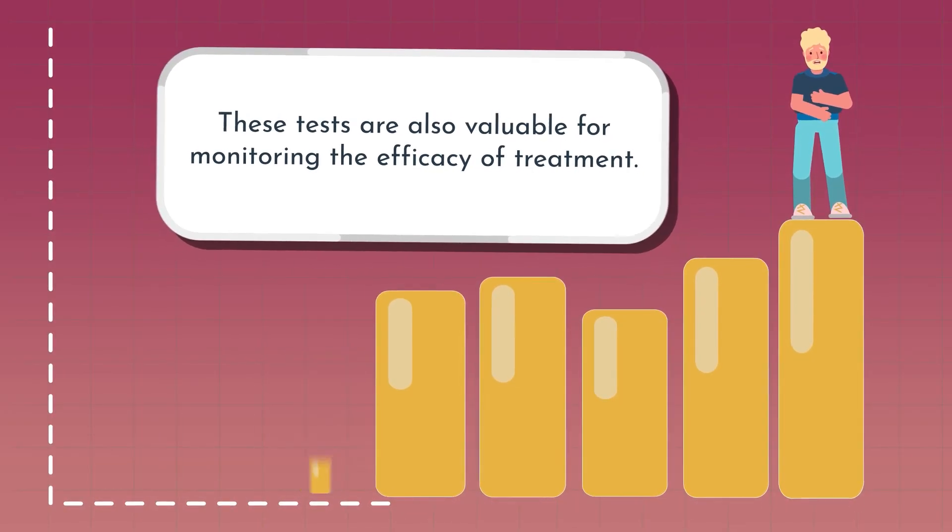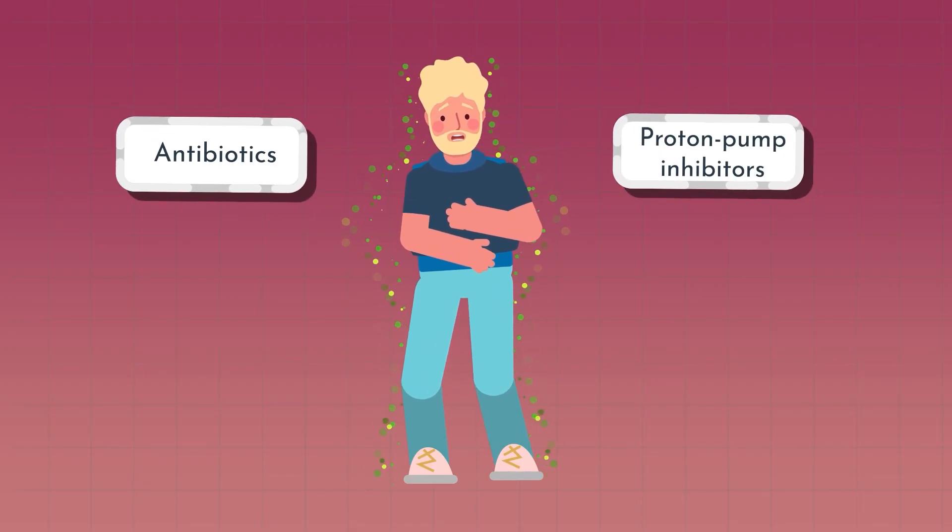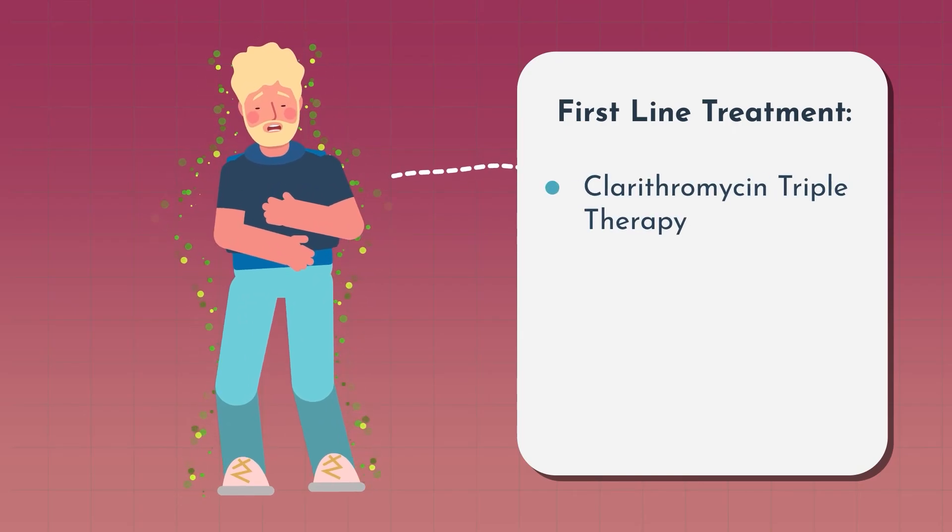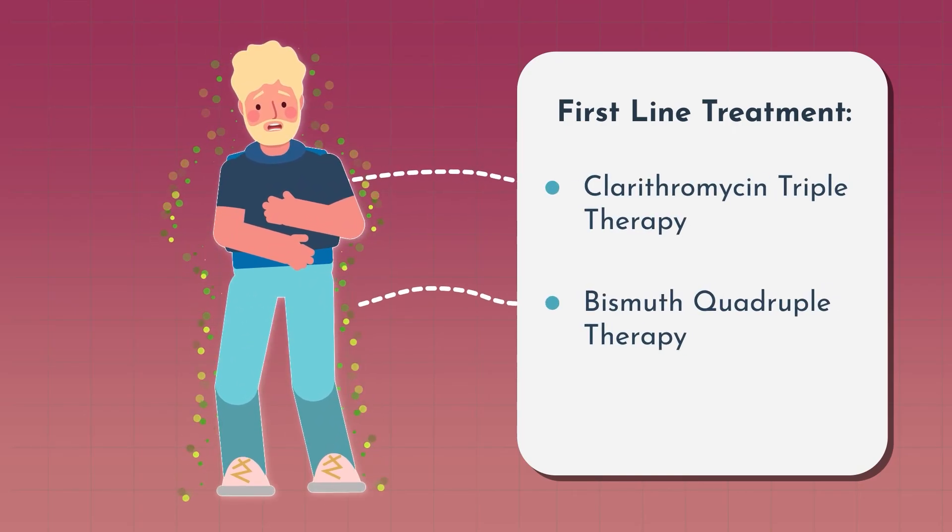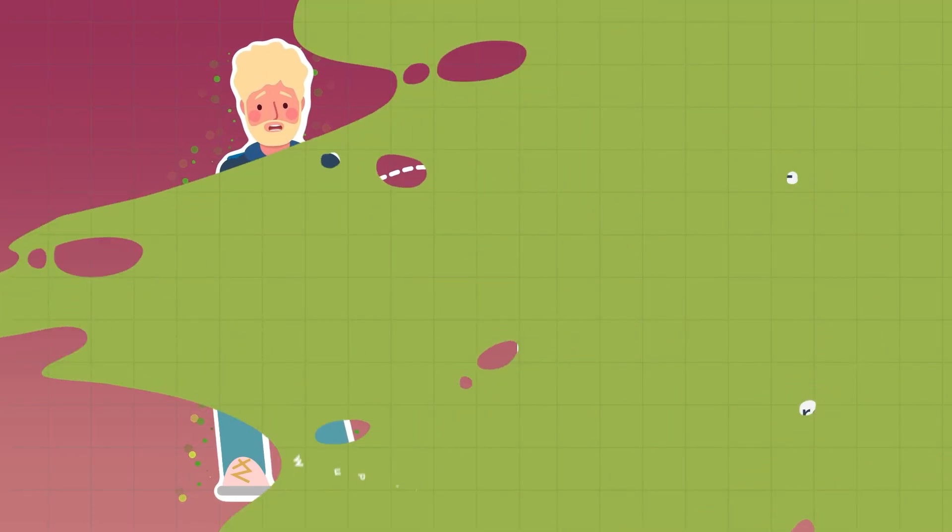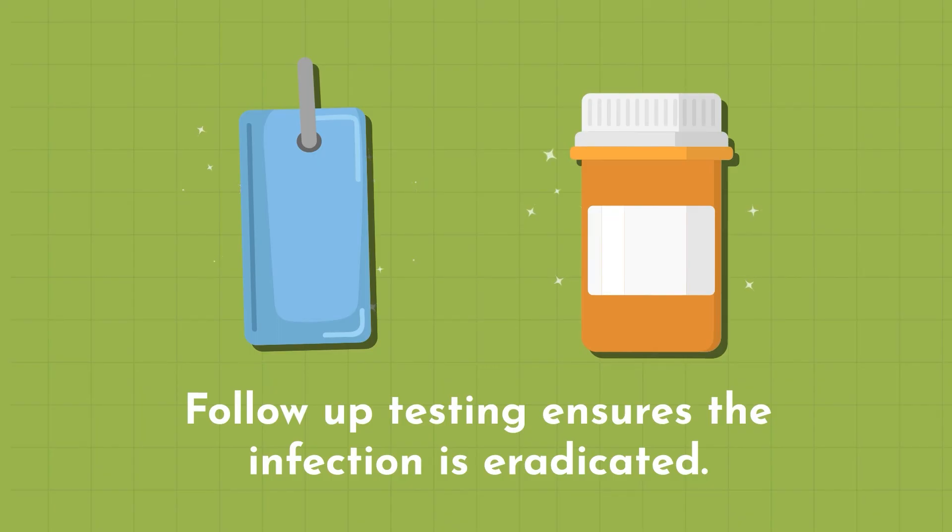Once an H. pylori infection is confirmed, treatment typically involves a combination of antibiotics, PPIs, and sometimes bismuth. First-line treatments include clarithromycin triple therapy, bismuth quadruple therapy, and concomitant therapy. Follow-up testing with urea breath test or stool antigen test ensures the infection is eradicated.